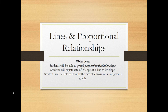Today's lesson is on lines and proportional relationships. By the end of this lesson, you should be able to graph proportional relationships, understand that the rate of change is the slope of a line, and be able to identify the rate of change of a line given a graph.